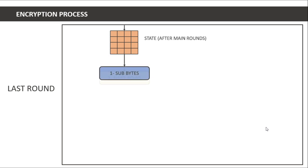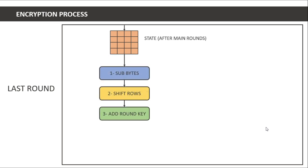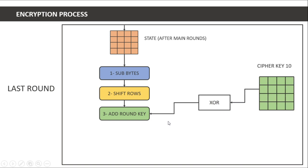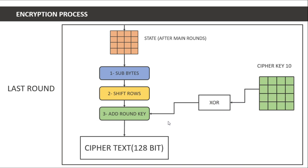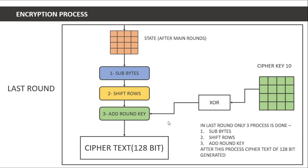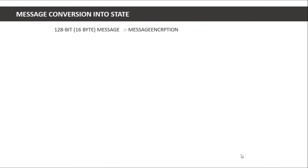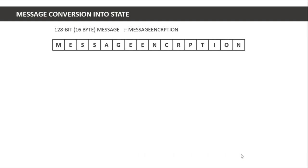After the nine main round loops, the state enters the final round. In the final round there is no mix columns step. We use cipher key ten, and after applying sub byte, shift rows, and add round key, we get our 128-bit cipher text. So in the final round only three processes are done: sub byte, shift rows, and add round key.